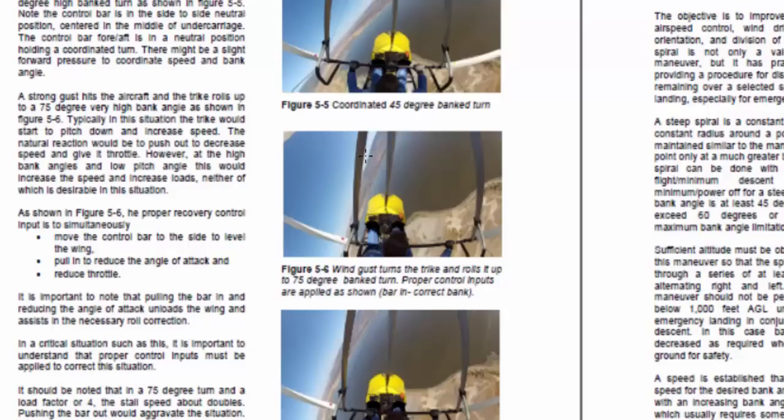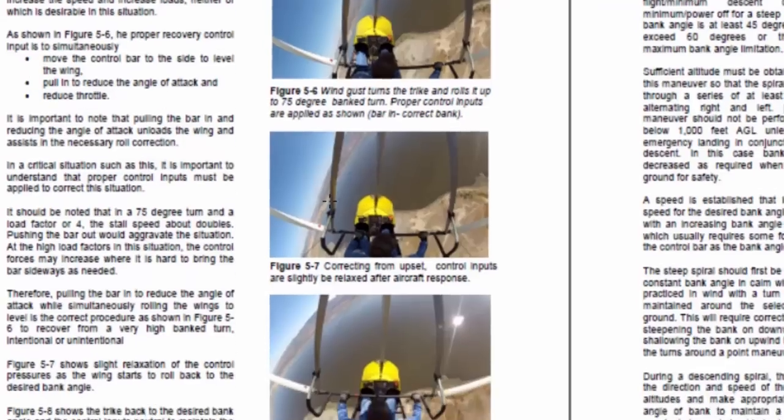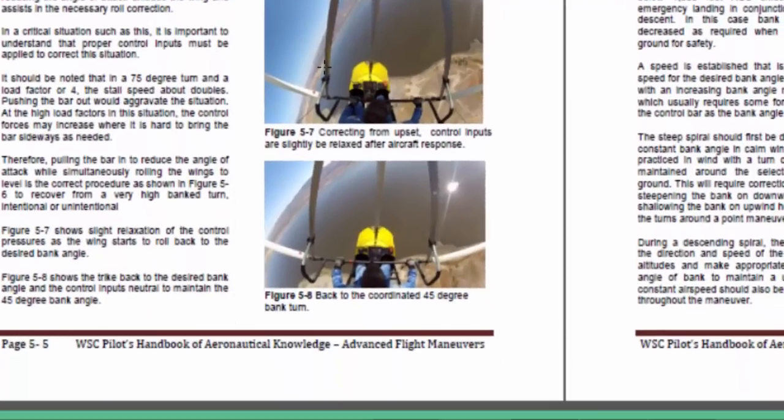One, reduce the angle of attack by pulling the bar in, and two, bring the bar over to level the wings. And when you do that, you'll be reducing your angle of attack and rolling out so that you'll be getting yourself back to a more level position.